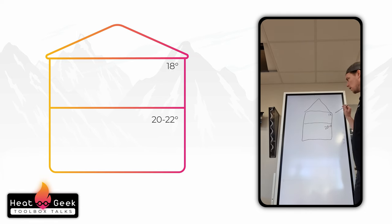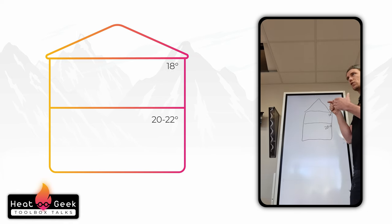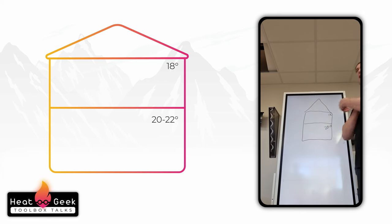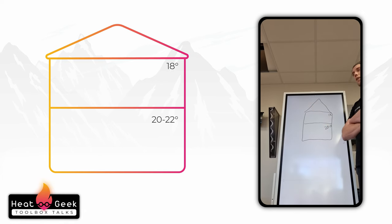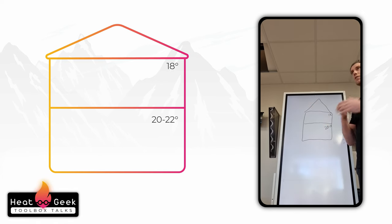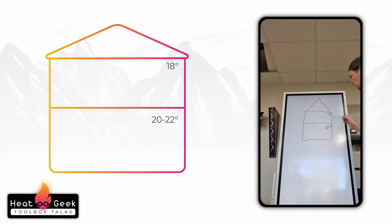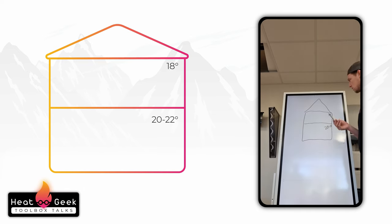People get confused between what their thermostat's set to and what actually is that temperature. So they set it to 16 and go "I'm comfortable at night at 16." No you're not. You're comfortable at night at 19. The house doesn't drop that much in temperature. That's actually probably a comfortable temperature though.